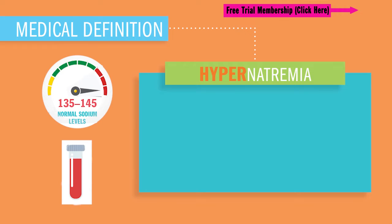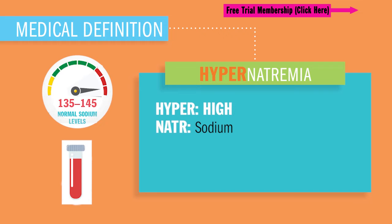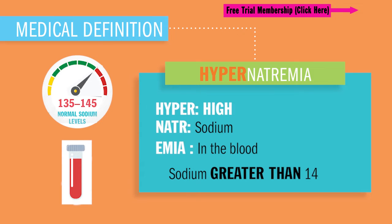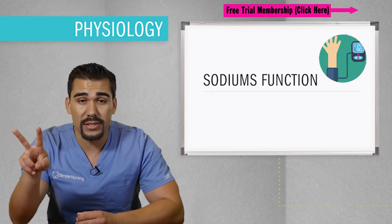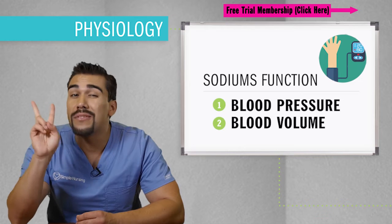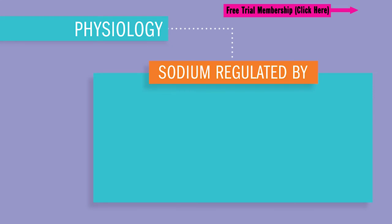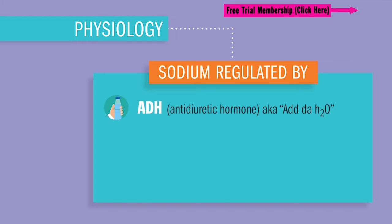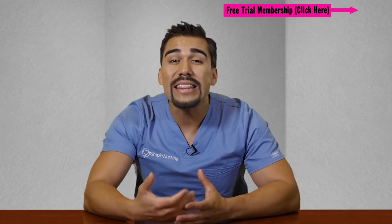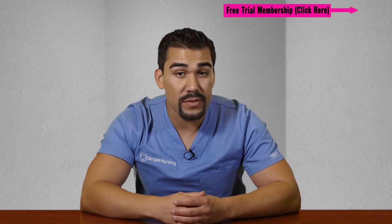Today we're wrapping up hypernatremia — hyper meaning high, nat meaning sodium, emia meaning in the blood — sodium greater than 145 milliequivalents per liter. Sodium's function is to maintain two things: blood pressure and blood volume. She's regulated by ADH, the anti-diuretic hormone, also known as ADH2O, which basically holds fluid in the body and influences sodium levels.